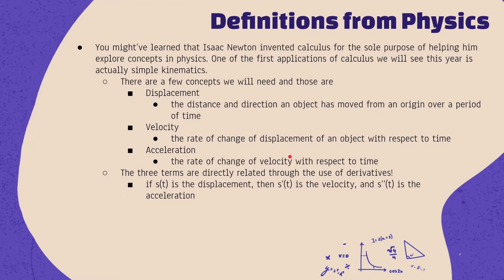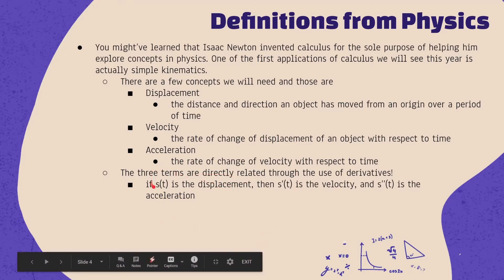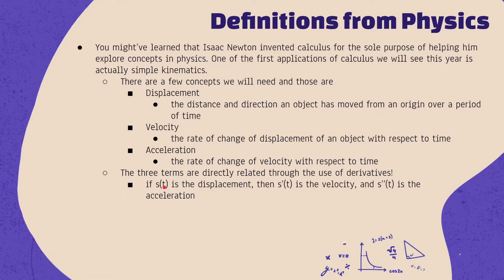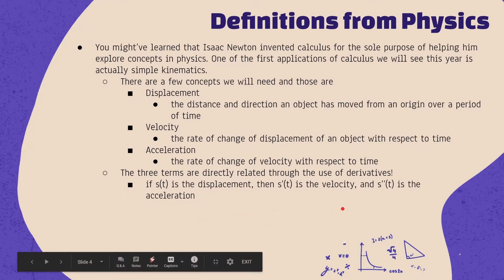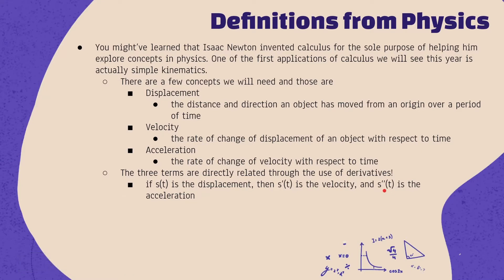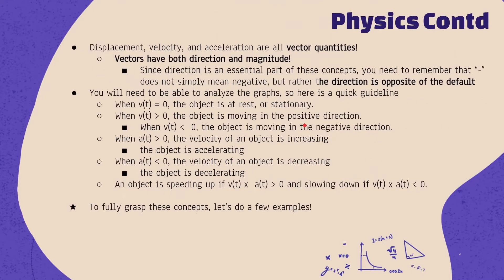All three concepts fit together nicely. In math, we express displacement as s(t), velocity as v(t) which is the first derivative of s(t), and acceleration as a(t) which is the second derivative of s(t). These relationships — using the first and second derivative — are what we'll use today to answer all our questions.